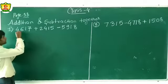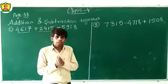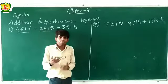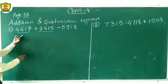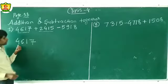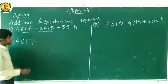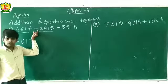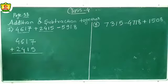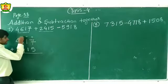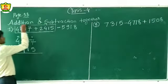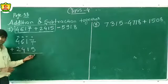First of all we will add these two numbers. I will write the numbers: 4617 and 2415. There is addition between these two numbers, so I will write the sum here. This is your ones, tens, hundreds, and thousands place. Now we have to add these two numbers — find out the sum.